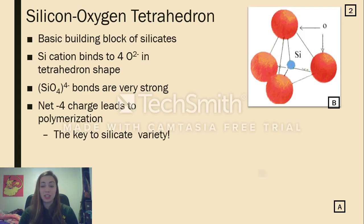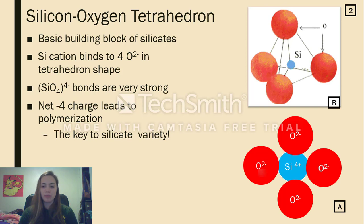It all starts with this silicon oxygen tetrahedron. This is the basic building block of all silicates. One small silicon 4-plus cation will sit in the center of this molecule. Its positive charge attracts four nearby negative oxygen atoms.